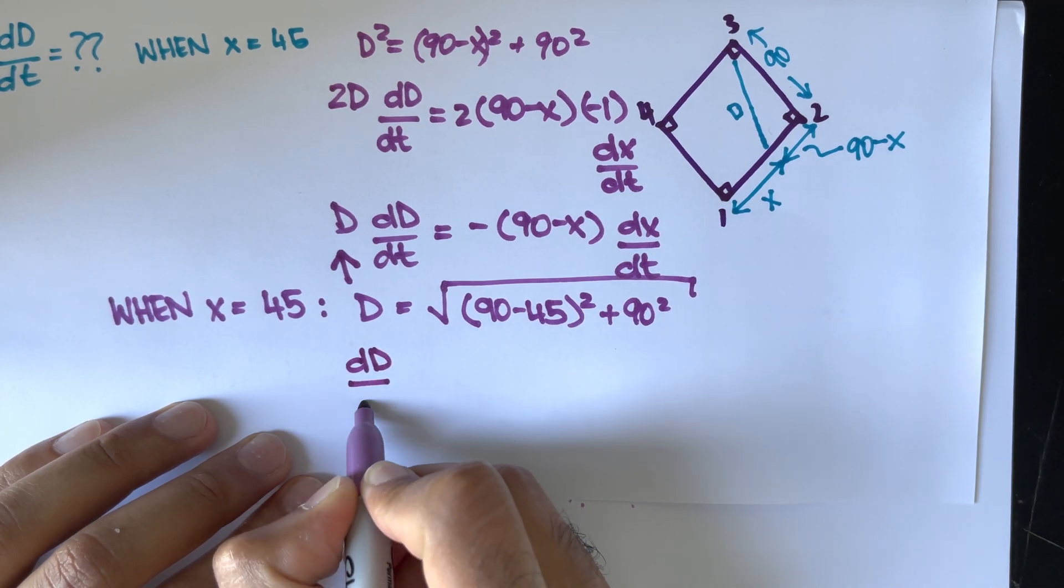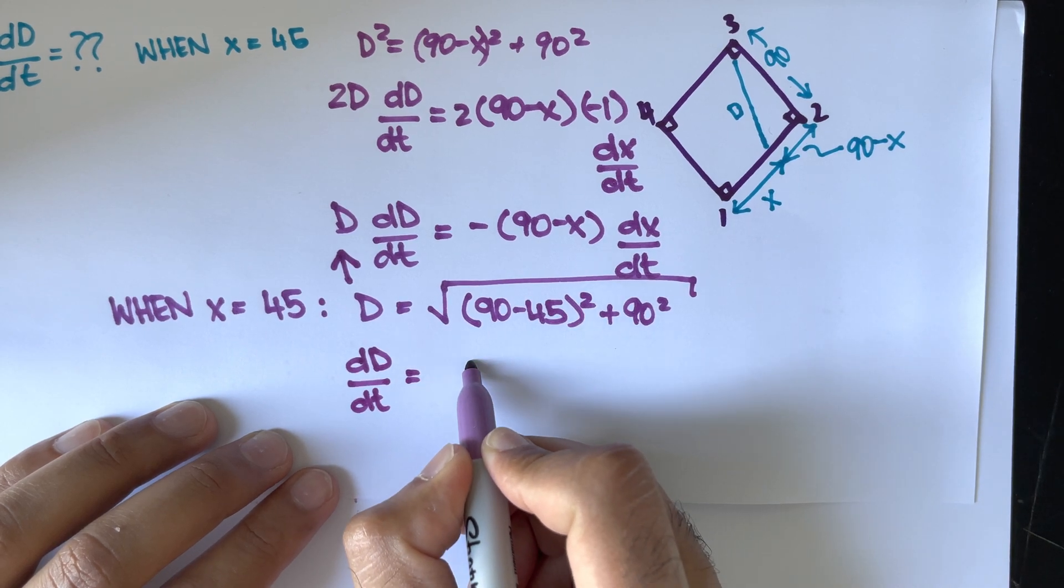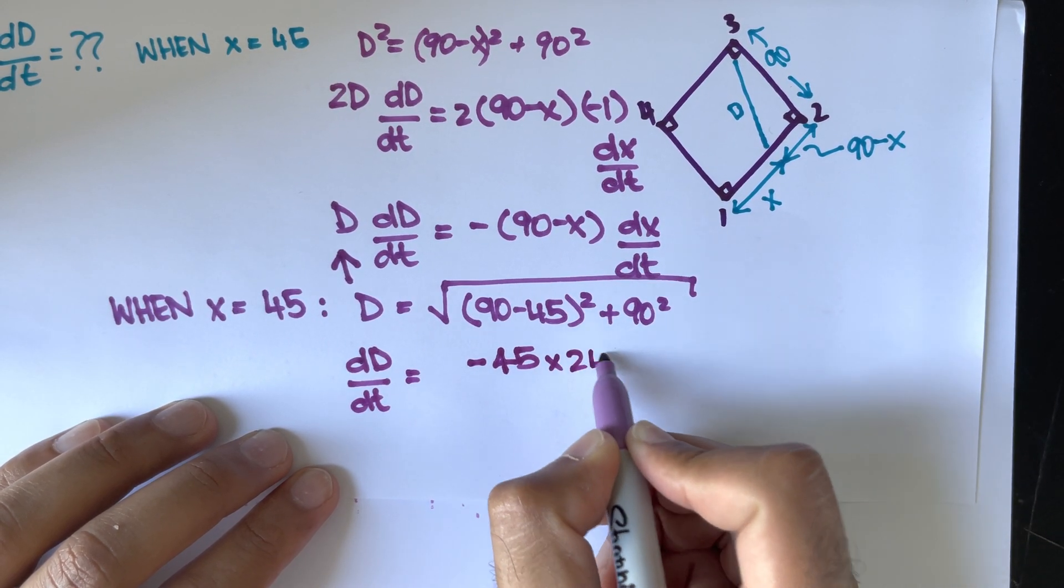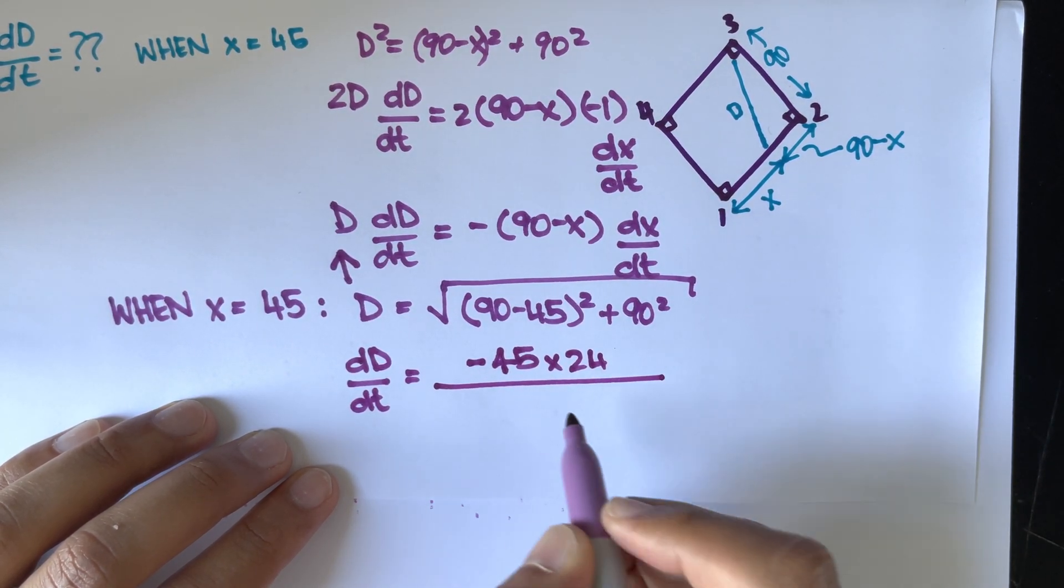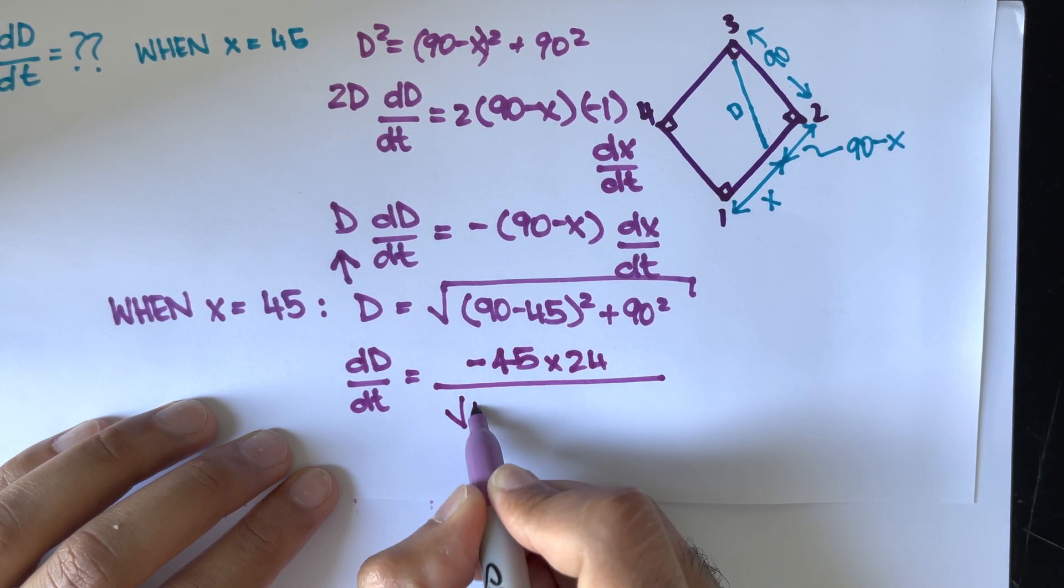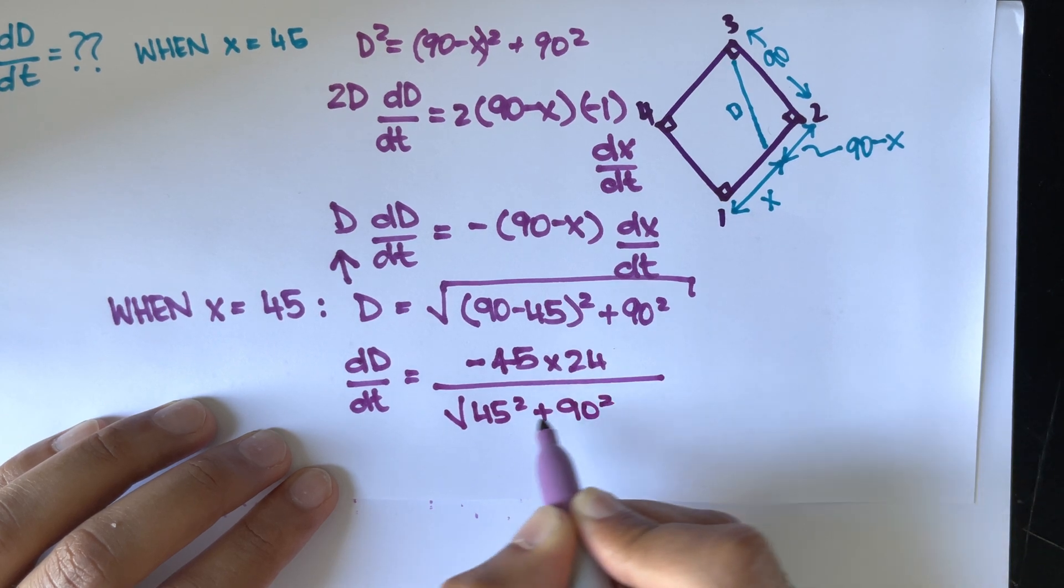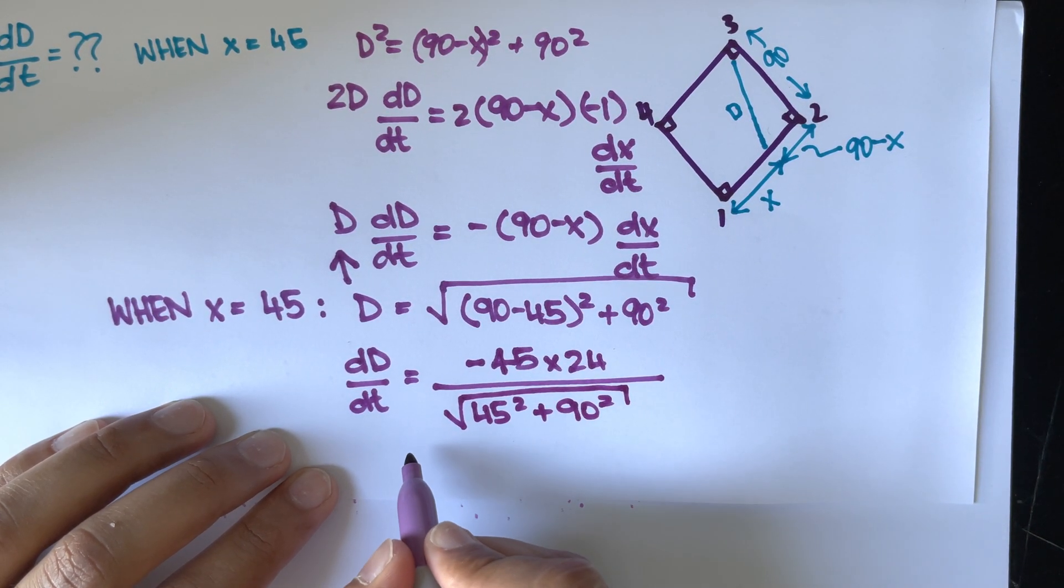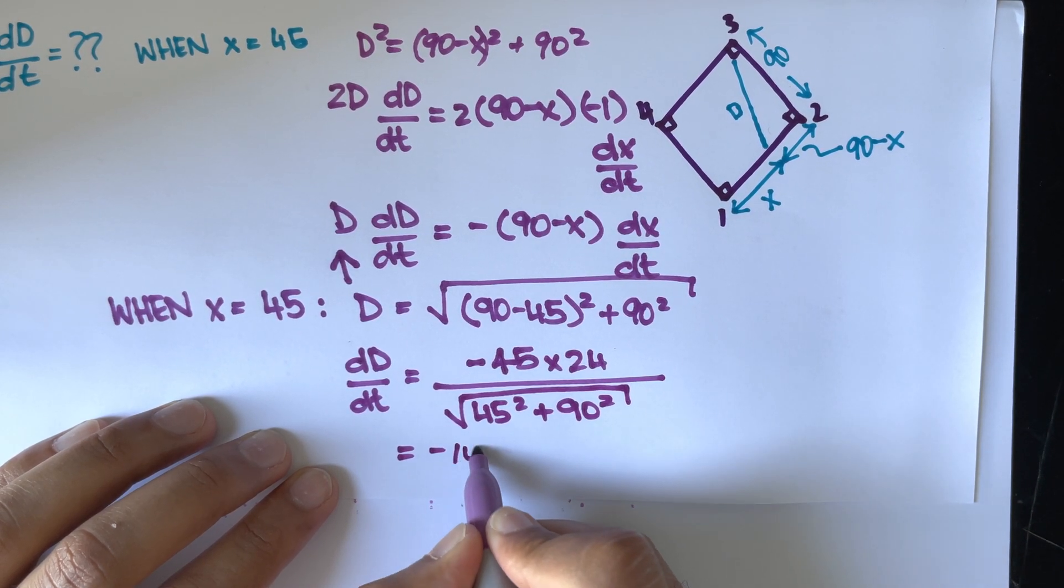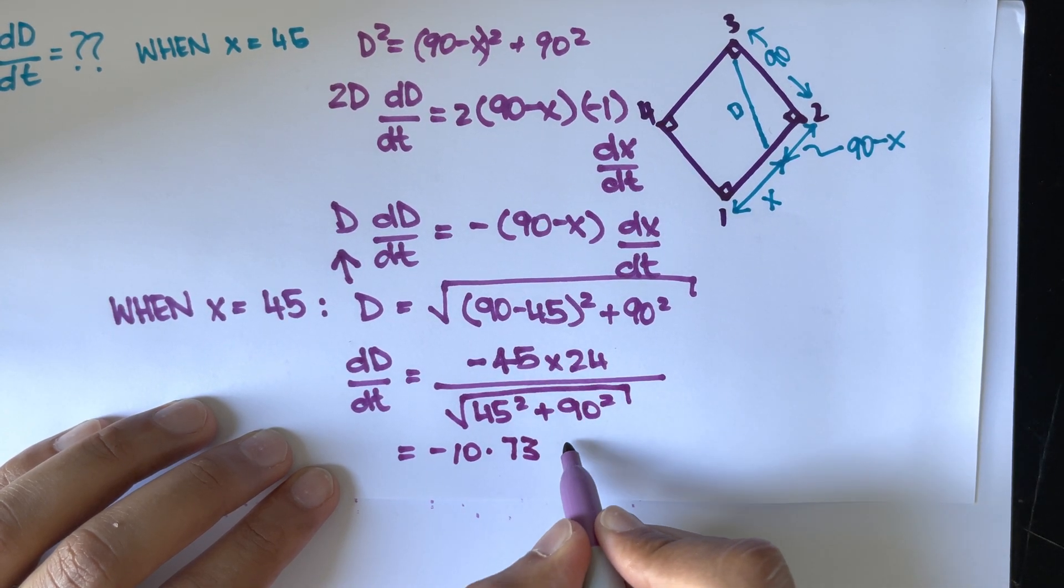dd/dt will be equal to negative 45 multiplied by 24, and that is all over the square root of 45 squared plus 90 squared. We will get an answer of roughly negative 10.73 feet per second.